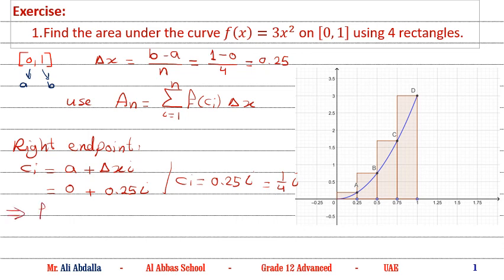We need to find f(c_i). f(c_i) means we must substitute c_i with x. Then we have 3·(1/4·i)² or 3·(i/4)². Here our function is f(x) = 3x².